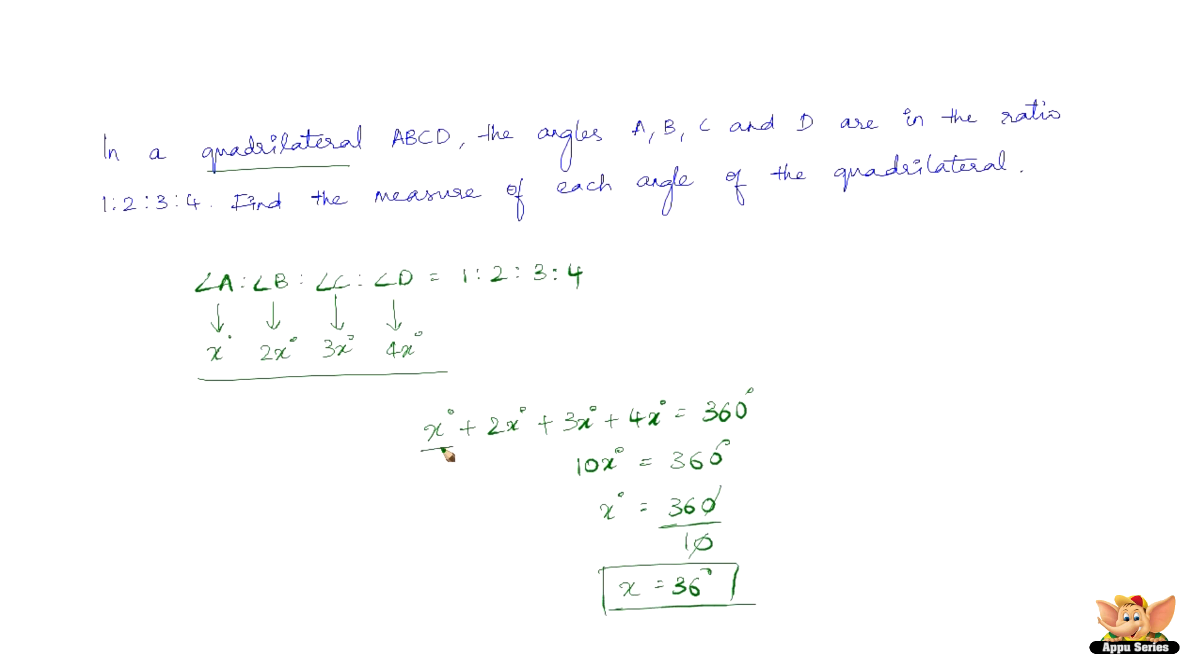We've found x. Now angle A is 36 degrees because it is only x. Angle B is 2x degrees, so it will be 2 into 36 degrees, which is 72 degrees.